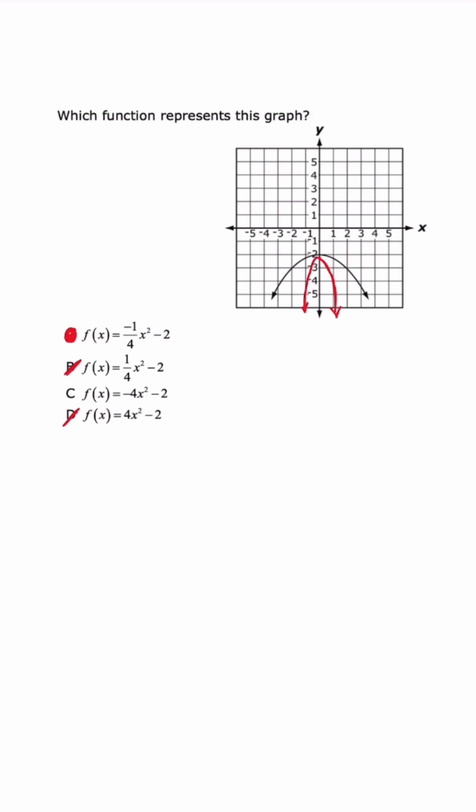Now, another way you could figure this out is looking at the ordered pair (2, -3). If we plug that into the D function, x is 2. 2 squared is 4. 4 times 4 is 16. 16 minus 2 is not going to be -3, so we know that's wrong.